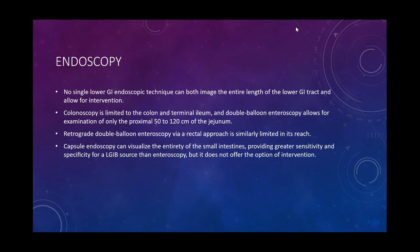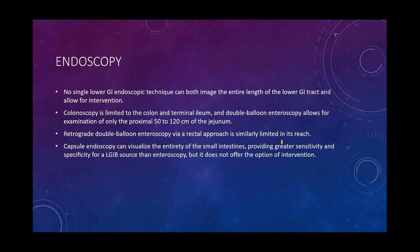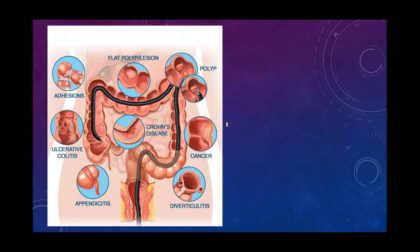No single lower GI endoscopic technique can visualize the entire lower GI tract. Colonoscopy is limited to the colon and terminal ileum. Double balloon enteroscopy shows only about 50-120 cm proximally within the jejunum, and retrograde double balloon enteroscopy has limited reach as well. Capsule endoscopy can visualize the entirety of the small intestine — it is very sensitive and specific — but doesn't offer intervention; it does help localize the bleed.